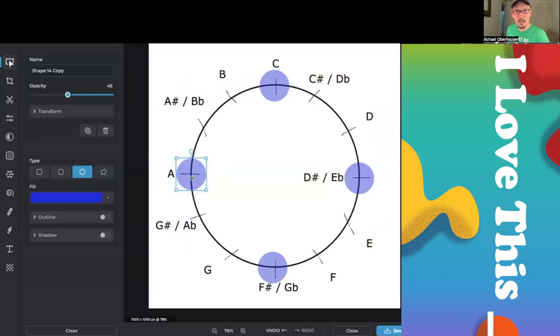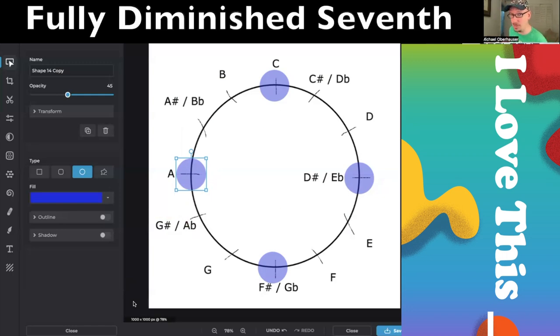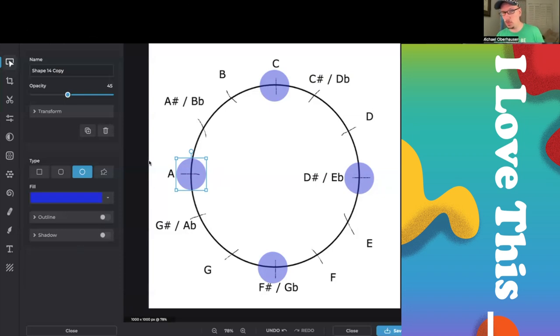Now we have four evenly spaced out pitches, and we get a fully diminished seventh chord. Now if we were saying this is a fully diminished seventh chord, we would normally spell this as B double flat instead of A, but we're thinking in enharmonics for right now. What if we have one more pitch?